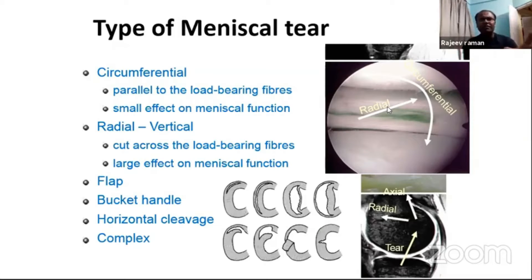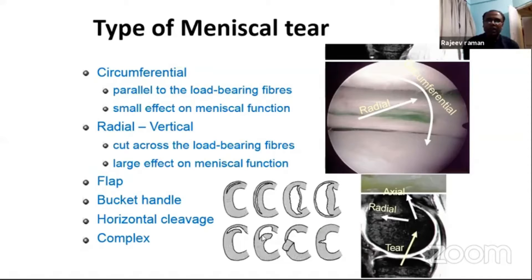Radial and vertical tears are the worst because they will be symptomatic. The patient will come to your clinic with pain, a click, or locking. You can also classify the meniscus tear according to shape — whether it's a flap type of tear, where you have one end attached, like a tongue-type tear.